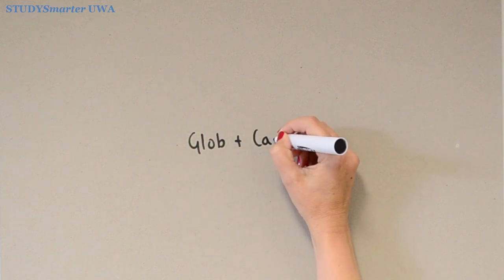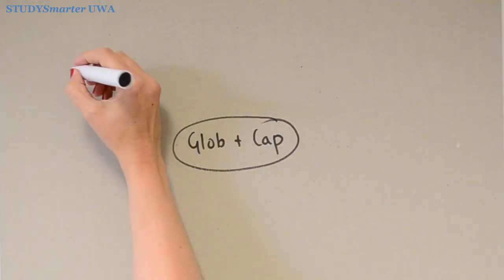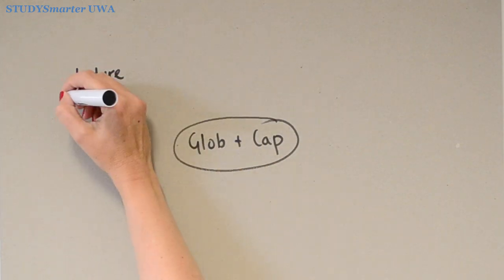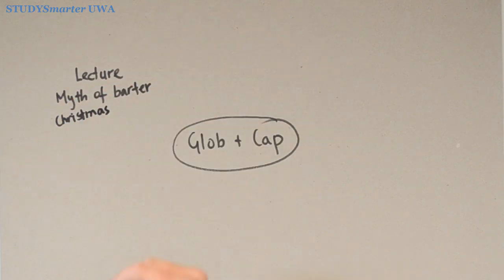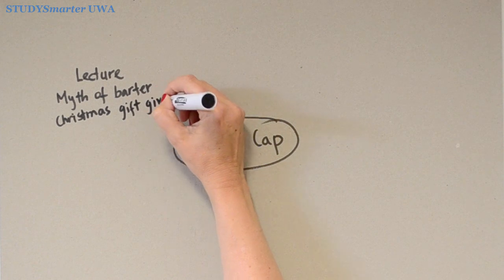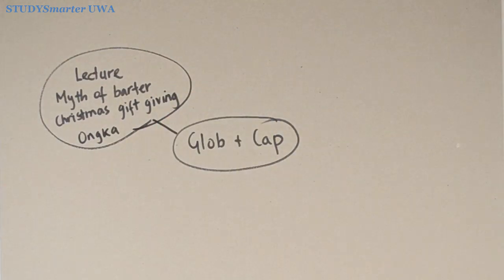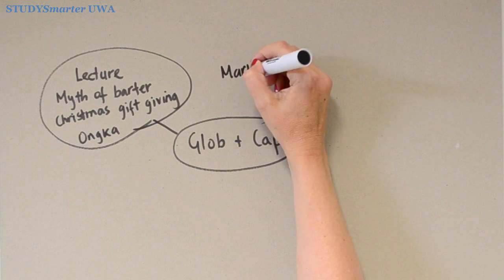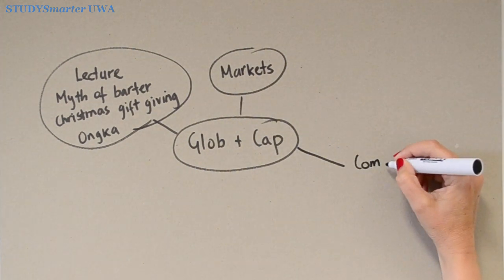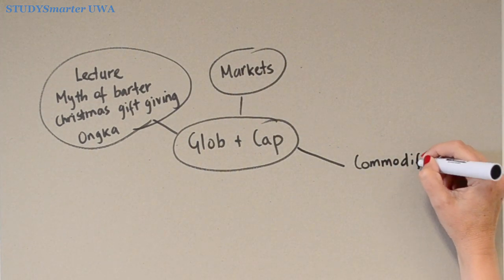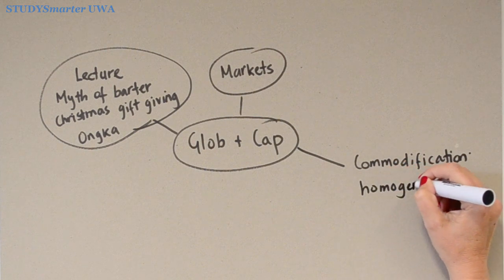So if I look at the mind map, the first thing I want to do is think of the sources we were introduced to. Off the top of my head, there was a lecture by Deborah McDougall, an essay on the myth of barter, something about Christmas gift giving, and the film Onka's Big Mocker. I need to systematically check out the other stuff listed in the LMS. I know we talked quite a bit about markets and commodification, which gets me thinking straight away about homogenization — that came up more when we started talking about popular culture.